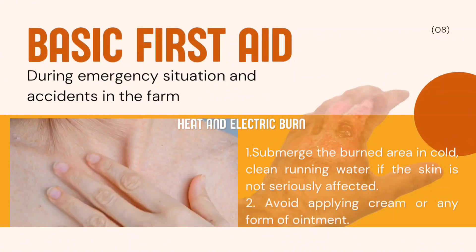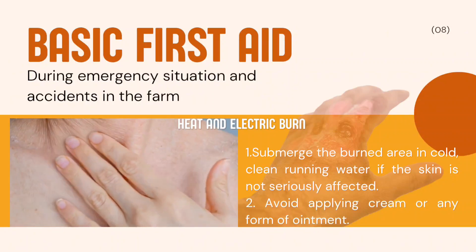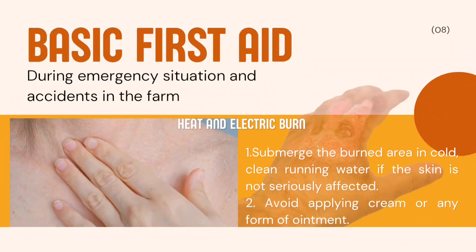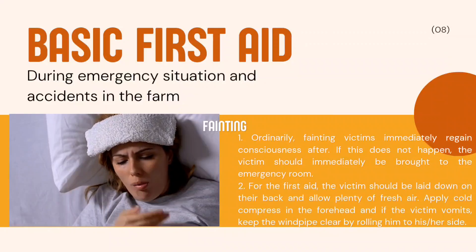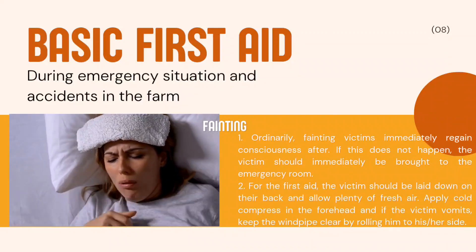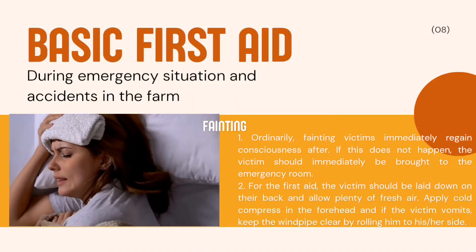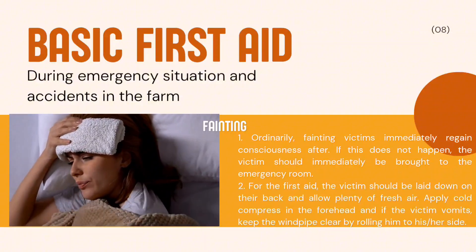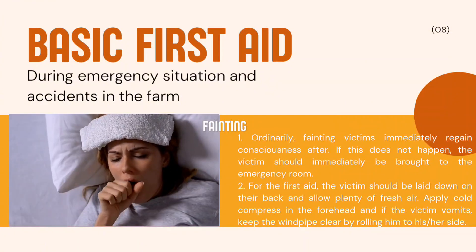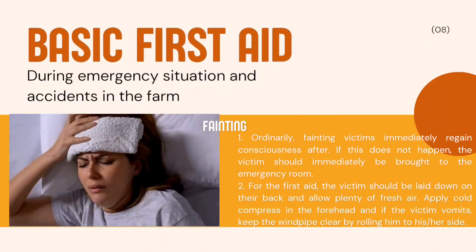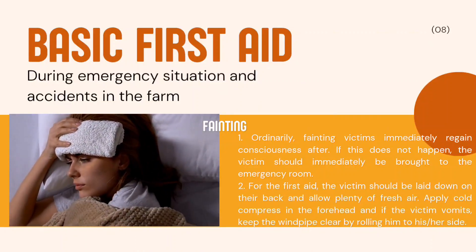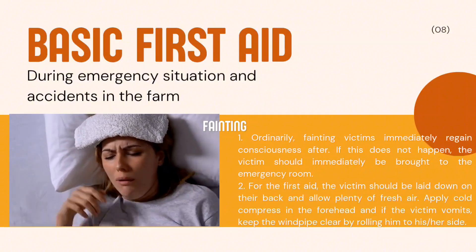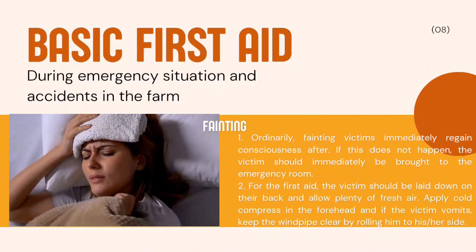4. Heat or electric burn. 1. Submerge the burned area in cold, clean running water if the skin is not seriously affected. 2. Avoid applying cream or any form of ointment. 5. Fainting. 1. Ordinarily, fainting victims immediately regain consciousness. If this does not happen, the victim should immediately be brought to the emergency room. 2. For first aid, the victim should be laid down on their back and allowed plenty of fresh air. Apply cold compress on the forehead, and if the victim vomits, keep the windpipe clear by rolling him or her to the side.